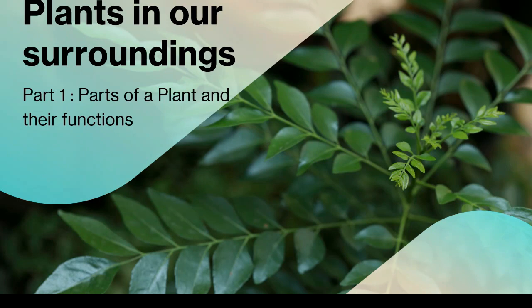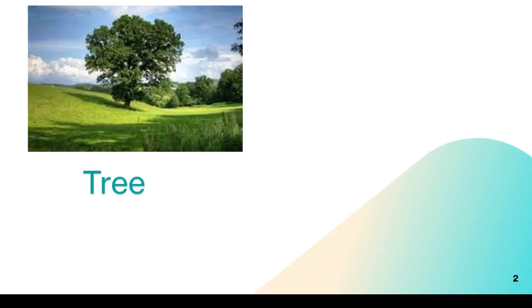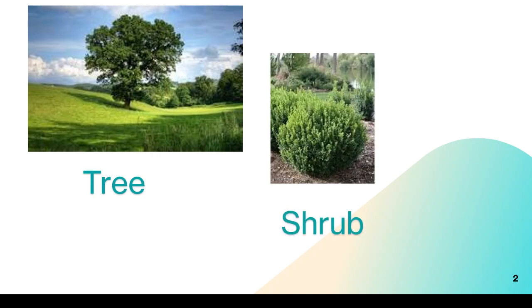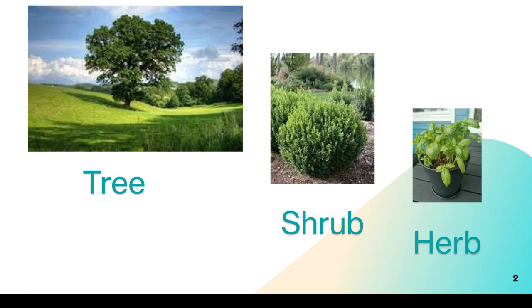We see many plants around us. They are of different shapes and sizes. Some plants grow tall, some stay short. A tree is a big and tall plant. A shrub is smaller than a tree. A herb is smaller than a shrub.